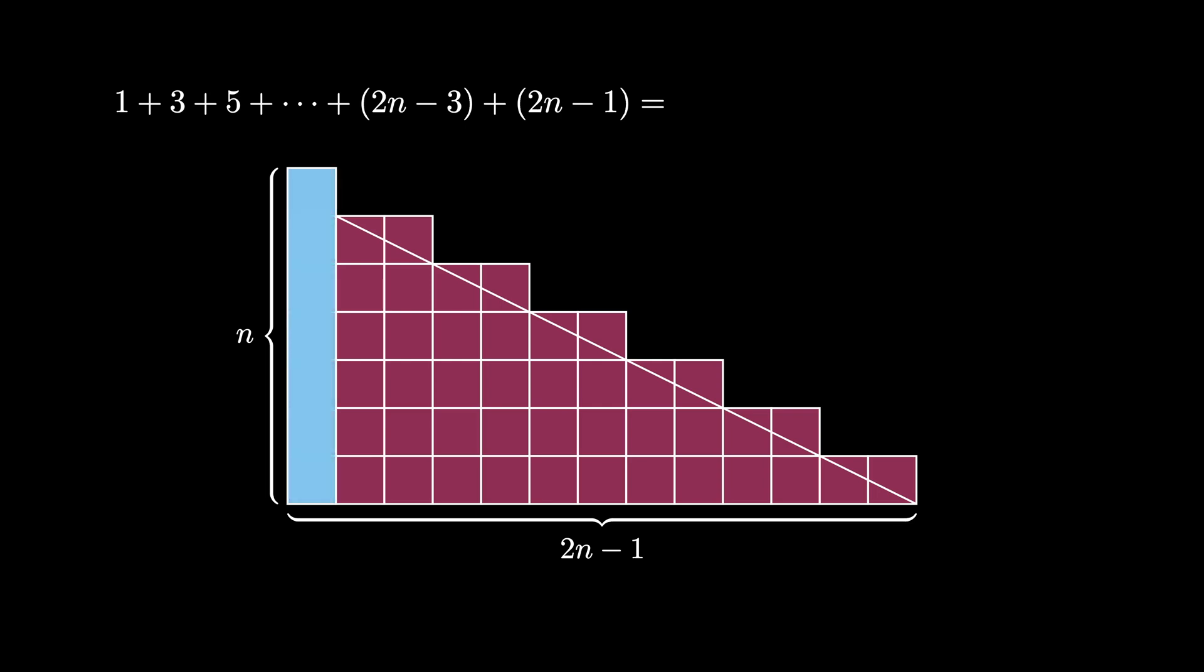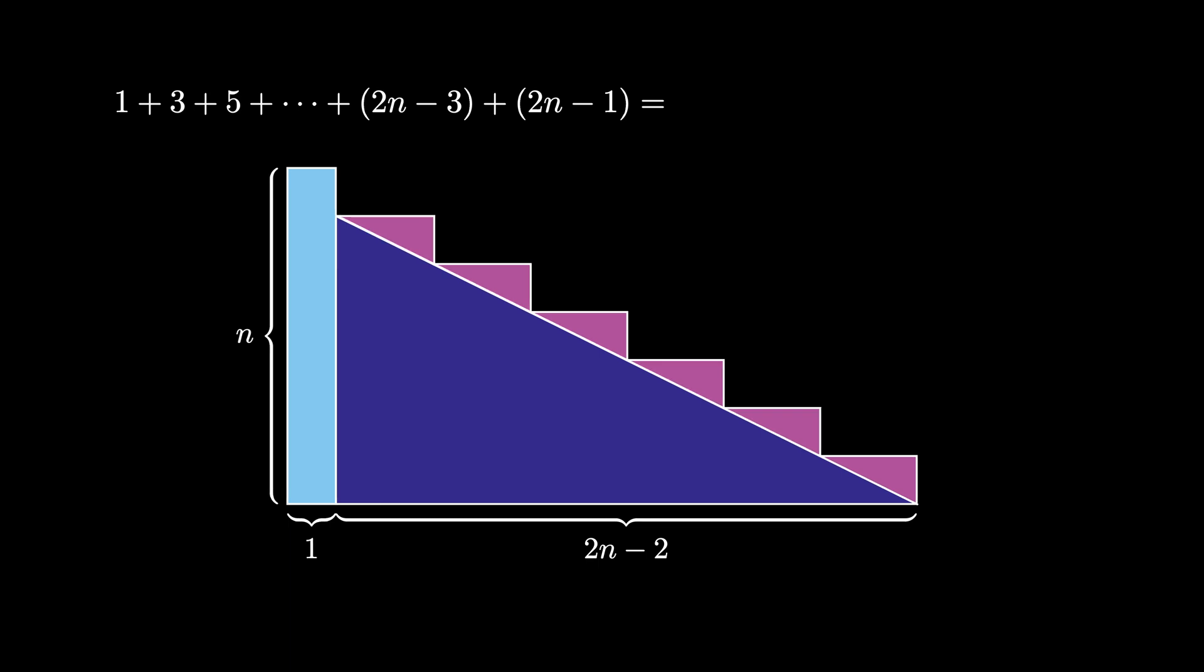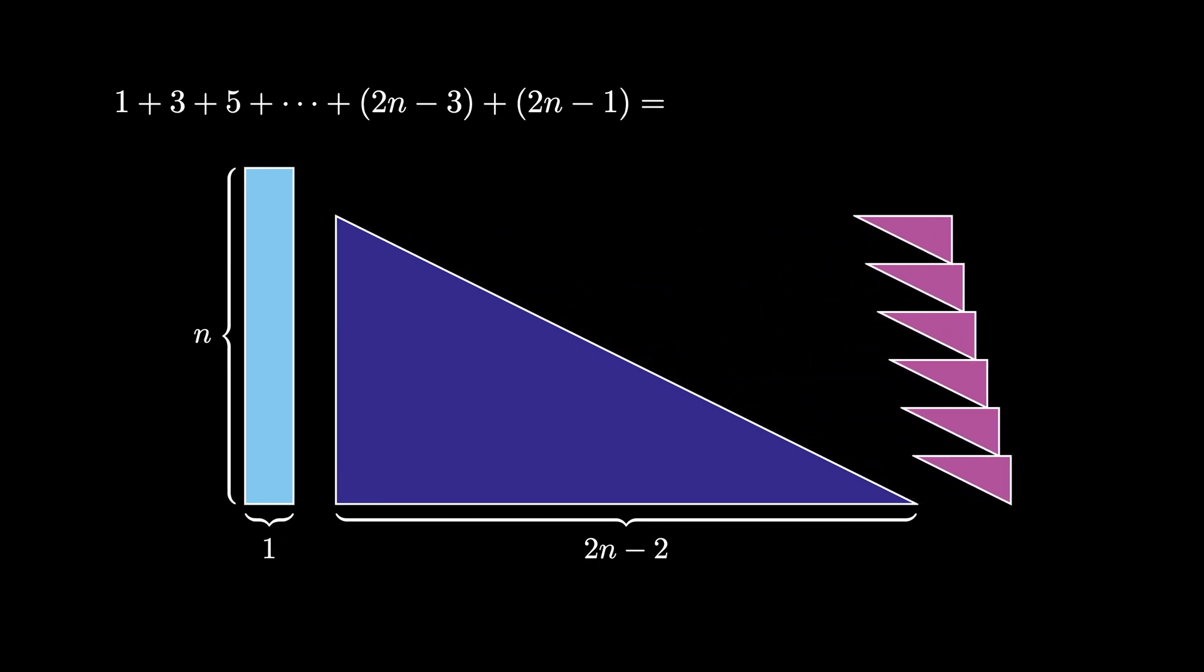We can use that line to break the diagram up into a variety of rectangular and triangular pieces as shown here. First, on the left side, we see a 1 by n rectangle. The triangle in the middle is 2n minus 2 by n minus 1, and the n minus 1 triangles on the right are all 2 by 1 triangles.